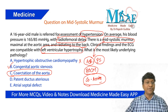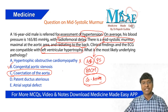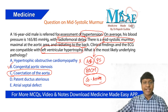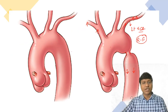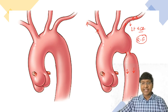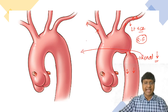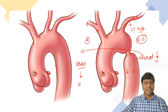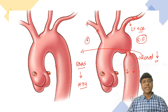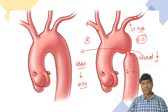There are two important points in favor of coarctation of aorta: radiofemoral delay and the presence of ejection systolic murmur in the aortic area radiating to the back. Why do these patients have hypertension? Because there is narrowing of the aorta distal to the left subclavian artery, renal perfusion will be reduced. Once renal perfusion is reduced, there will be activation of the renin-angiotensin-aldosterone system, and because of this the individual will have hypertension.